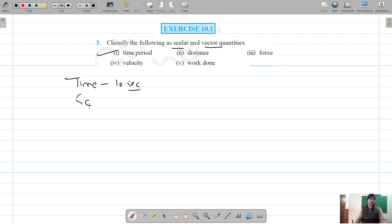It has no direction, so this one is a scalar quantity. Next one is distance. Distance also has magnitude only with no direction, so this is also a scalar quantity.